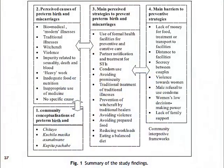The second theme covers the perceived causes of preterm birth and miscarriage. These causes include traditional and modern illness, witchcraft, violence, impurity, heavy work, and improper use of medicine.